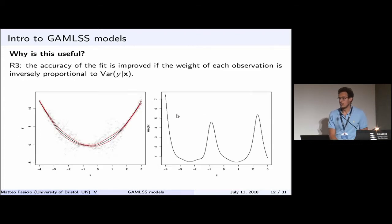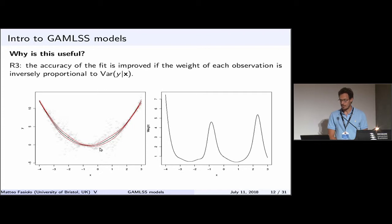Finally, even if you're only interested in modeling the expected value of Y given X, you'd want each observation's weight to be inversely proportional to its variance. Here the variance changes in a sinusoidal way — high variance here, low variance there. A point with very low variance should get high weight because there is low uncertainty there, while a point with high uncertainty should get low weight. Taking variance into account often gives better accuracy even when just estimating the mean.